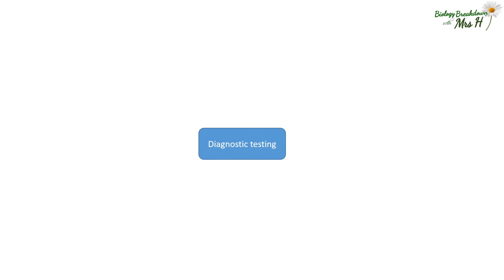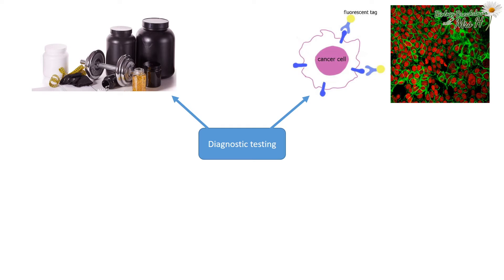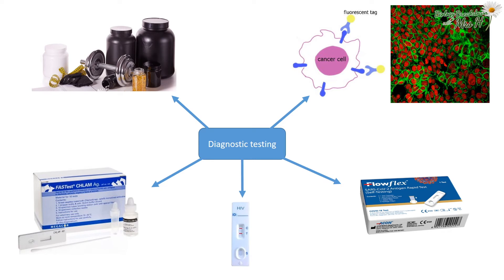Monoclonal antibodies can also be made and used to test for other things, such as testing competitors' blood for performance-enhancing drugs. Antibodies can be tagged with a fluorescent dye — these particular antibodies are especially made to bind to tumour antigens, and doctors can use a special camera to locate where the tumour is in the patient. They can also be used to test for the presence of particular pathogens. We're all very aware of the lateral flow tests used to test for COVID, which use monoclonal antibodies, as do tests for other pathogens such as the HIV virus and the bacteria that cause chlamydia.